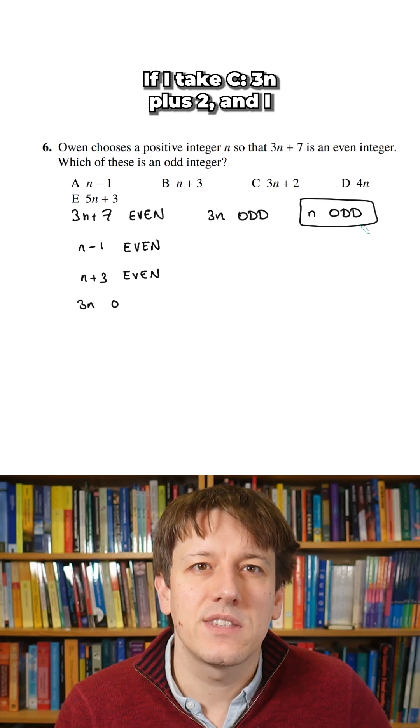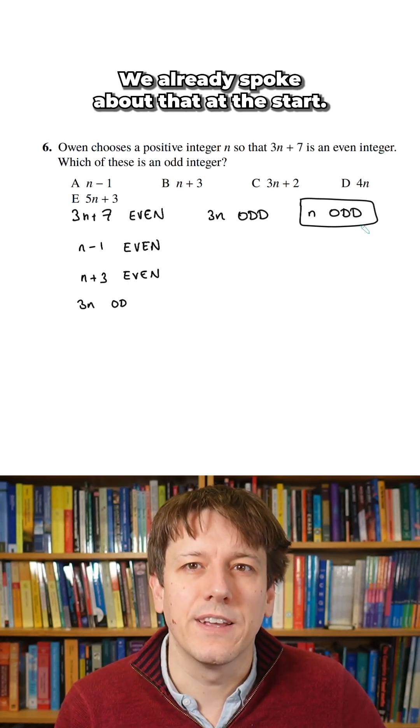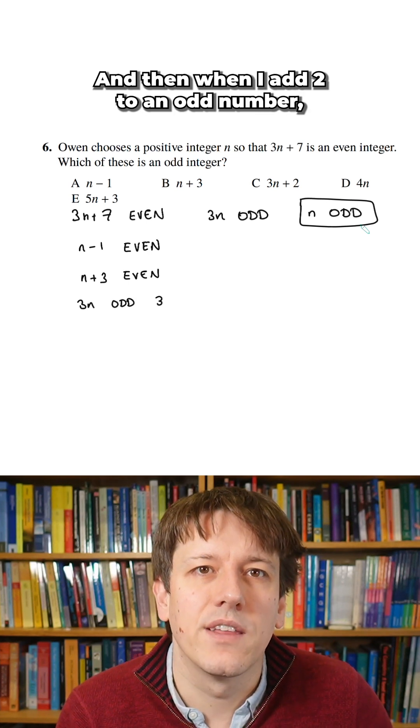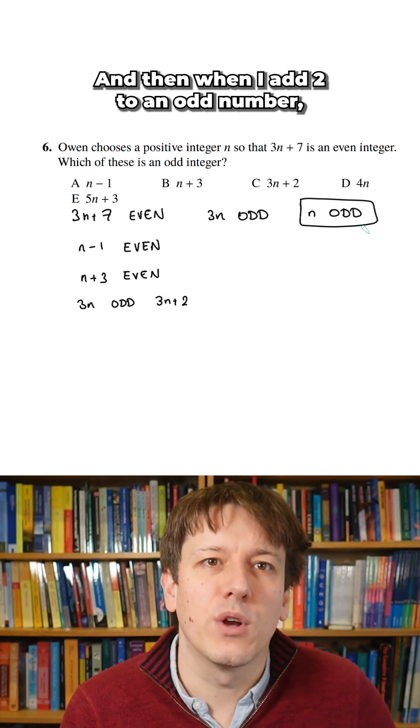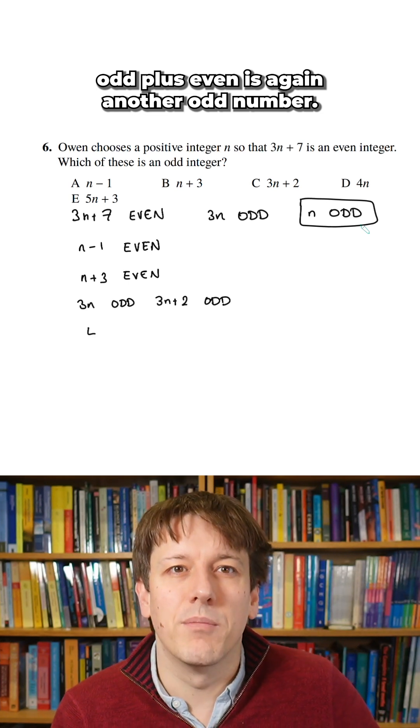If I take for C, 3n plus 2, and I think about 3n first, we know 3n is odd. We already spoke about that at the start. And then when I add 2 to an odd number, odd plus even is again another odd number.